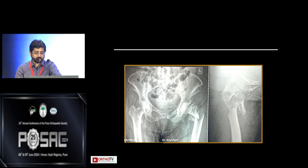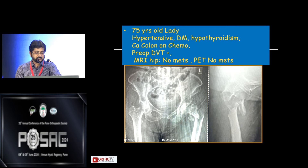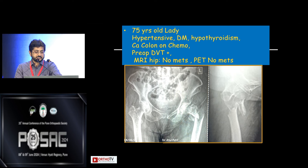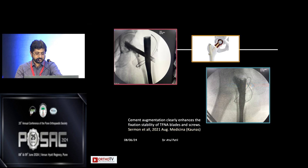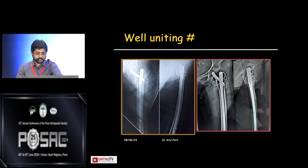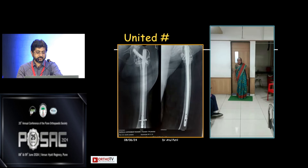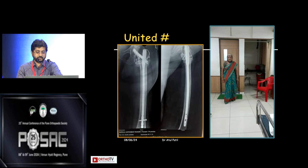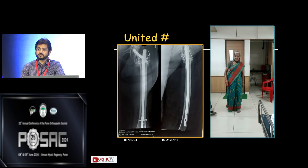Another patient: reverse IT fracture in a 75-year-old lady with hypertension, diabetes, hypothyroid, CA colon on chemotherapy, with pre-op DVT. MRI of hips and PET scan showed no metastases. Should we replace or fix? This was fixed in the lateral position using TFNA with cement augmentation and lateral wall management. The fracture is uniting well and the patient returned to her original walking ability.